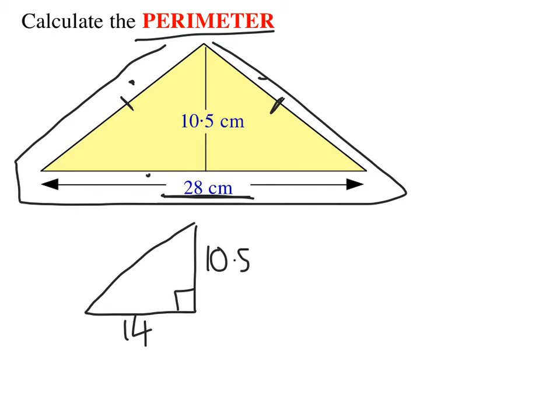So using Pythagoras to work out this, I would get x squared is equal to 10.5 squared plus 14 squared, which, if I put that into my calculator, x squared will be 306.25.